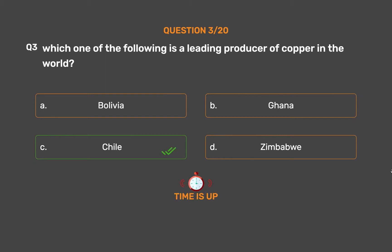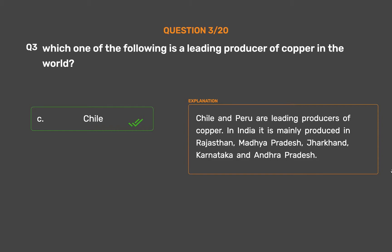The correct answer is Option C: Chile. Chile and Peru are leading producers of copper. In India, copper is mainly produced in Rajasthan, Madhya Pradesh, Jharkhand, Karnataka, and Andhra Pradesh.